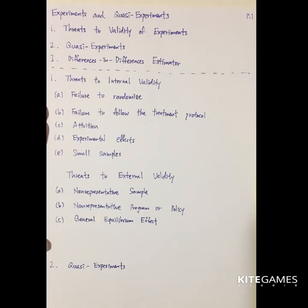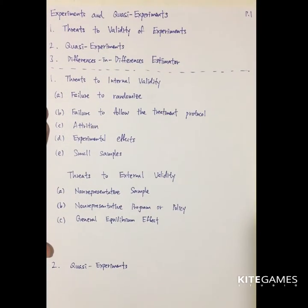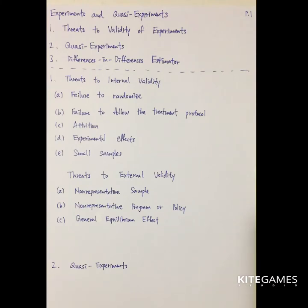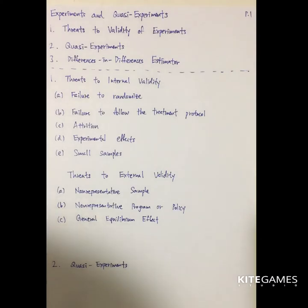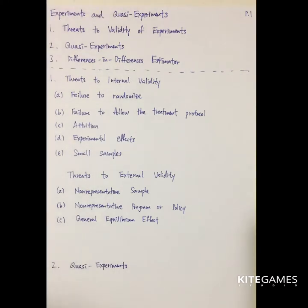In this video, we will talk about experiments and quasi-experiments — how you can design your experiment to test whether dependent variables have some relation with your independent variables. Economists can use this to estimate the relation between two variables. First, I will talk about the threats to the validity of experiments — what will threaten the predictive power of your experiments.